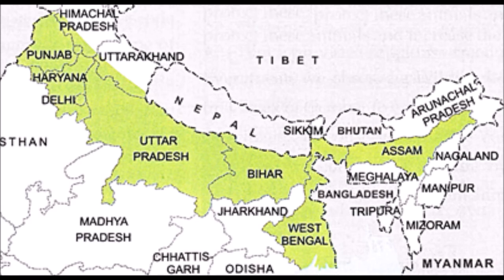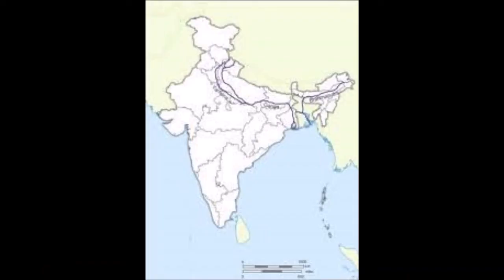In India we have the northern plains in the north, which covers the states of Punjab, Haryana, Uttar Pradesh, Delhi, West Bengal, Bihar and some part of Assam. Rivers like the Ganga and Yamuna flow through this plain.